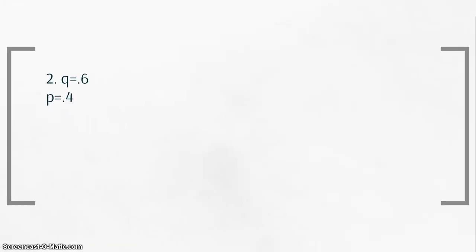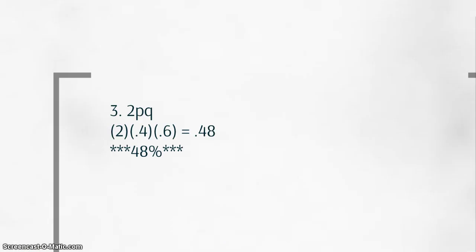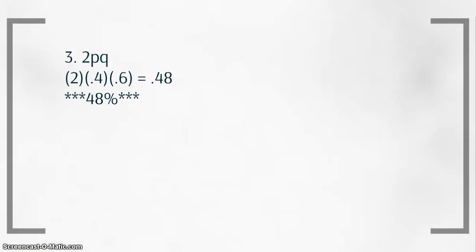Solution for two: we really already figured this out. We've already figured out q. The frequency of the recessive allele is 0.6 and the frequency of the dominant allele p is 0.4. So we've already figured that out. And the last question, number three, asked you to figure out the percent of the population